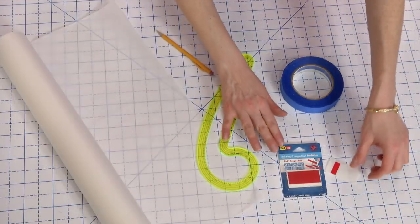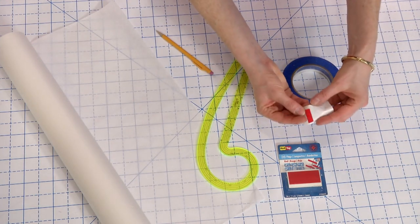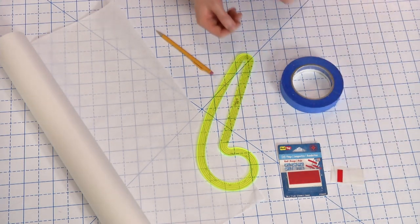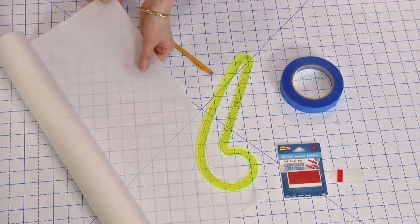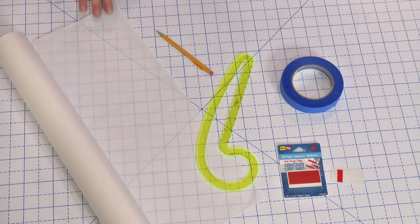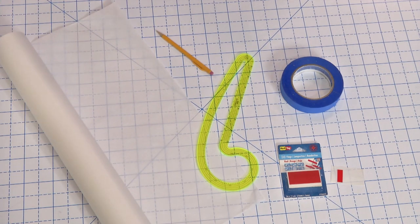Pick up or order some file flags, miniature removable stickers. We have some online sources listed in the video description. You'll also need medical exam paper. This translucent paper is sold in rolls and it's ideal for tracing patterns. Be sure to use the smooth, not the crepe variety.